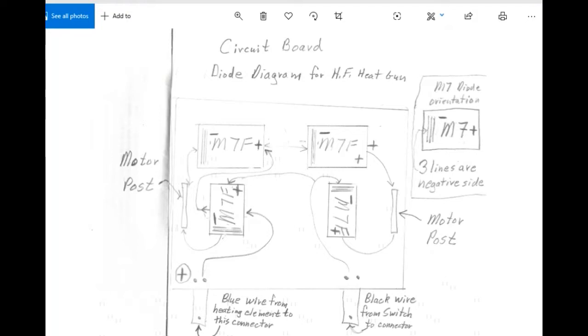So the proper orientation of these diodes is very important. One way they're going to allow current to flow through them, and the other way they're not going to allow current to flow through them. So they have to be properly oriented on this circuit board in order for it to work. This diagram came in very handy for me.